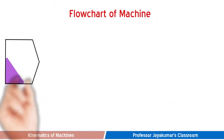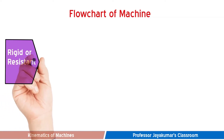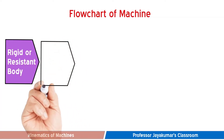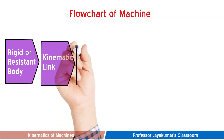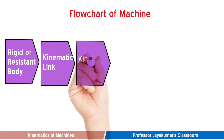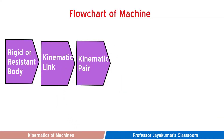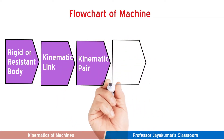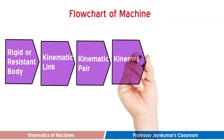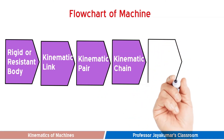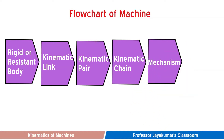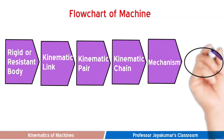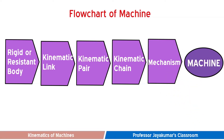A thorough understanding of kinematic nomenclature is very essential for the study of kinematics of machines. If you consider a machine as a building block game, the kinematic link forms the basic building block. Links are made up of rigid or resistant bodies. An assembly of two links forms a kinematic pair, and assemblage of kinematic pairs forms a kinematic chain. If at least one link of the kinematic chain is fixed, we obtain a mechanism, and one or more mechanisms form a machine.